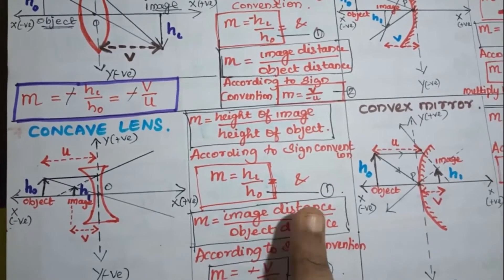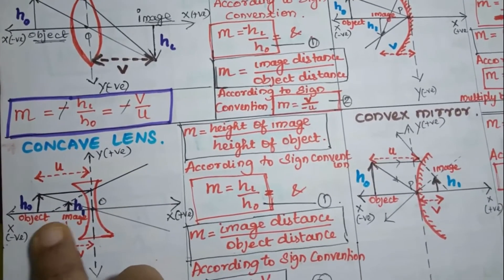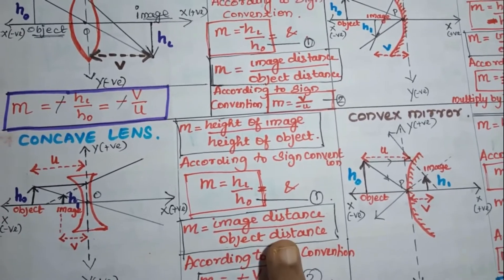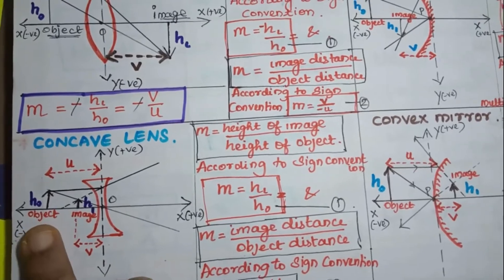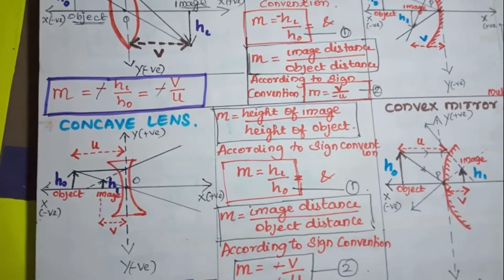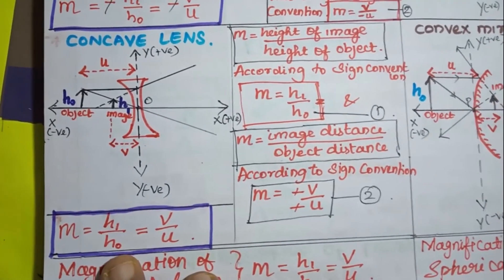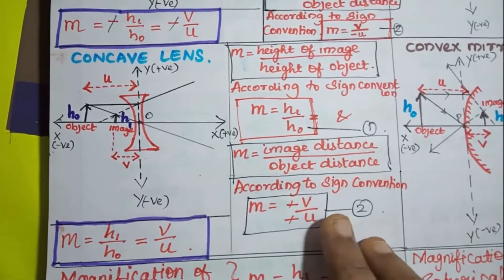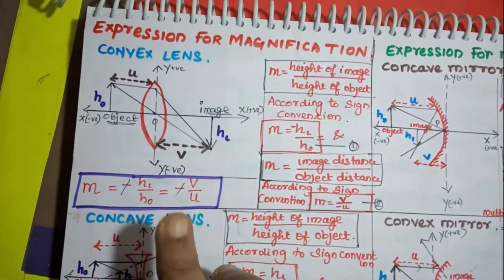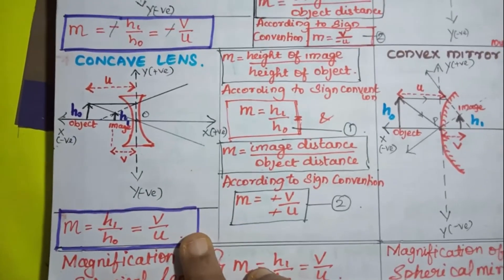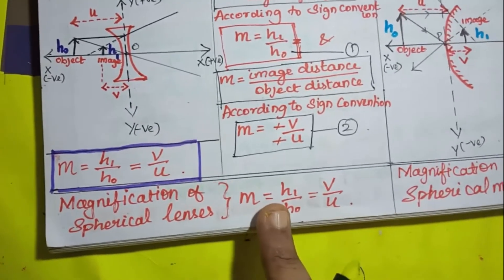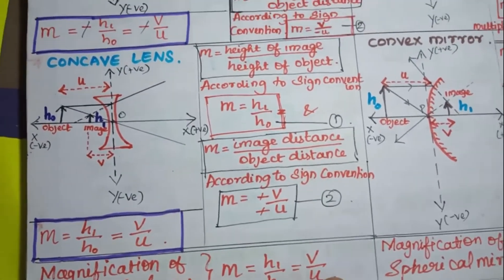For the concave lens, the image lies along the negative side of the x-axis, so it is −V. The object also lies along the negative side of the x-axis, so it is −U. Comparing the two equations, we get M = H1 / H0 = V / U, because both minus signs cancel in V / U. So for both convex lens and concave lens, we arrive at the same formula: M = H1 / H0 = V / U.